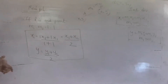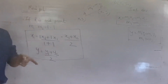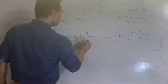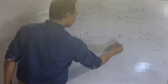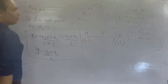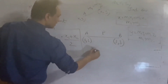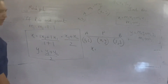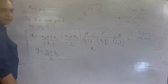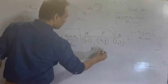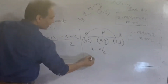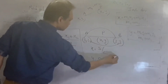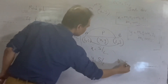Midpoint के coordinates निकालने के लिए दोनों X को plus करो divided by 2, और दोनों Y को plus करो divided by 2। जैसे A के coordinates हैं (3,2) और B के हैं (2,3), Midpoint निकालना है। X coordinate = (3+2)/2 = 5/2। Y coordinate = (2+3)/2 = 5/2। तो Midpoint P आया (5/2, 5/2)।